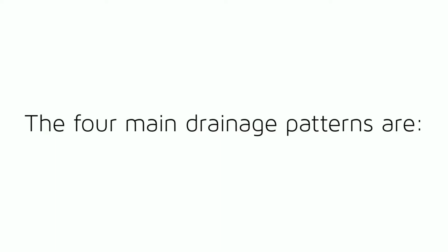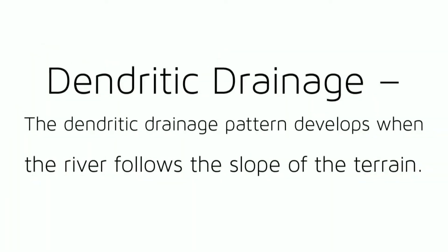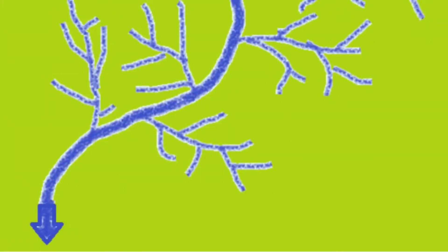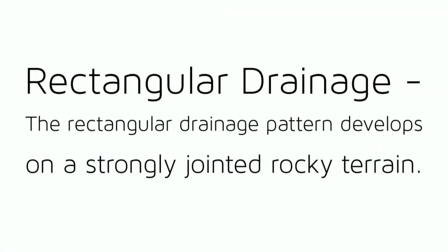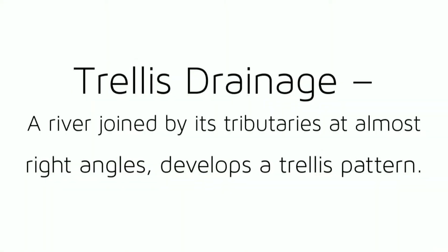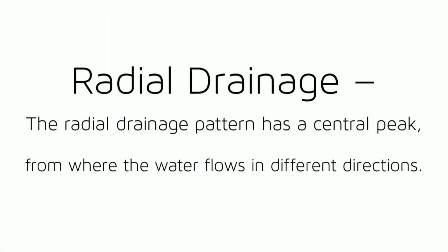The four main drainage patterns are: Dendritic Drainage — the dendritic drainage pattern develops when the river follows the slope of the terrain. Rectangular Drainage — the rectangular drainage pattern develops on a strongly jointed rocky terrain. Trellis Drainage — a river joined by its tributaries at almost right angles develops a trellis pattern. Radial Drainage — the radial drainage pattern has a central peak from where the water flows in different directions.